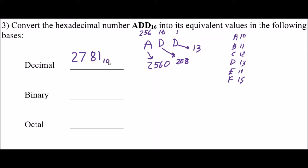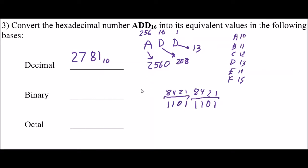Going to binary — each hexadecimal digit becomes 4 binary digits. A D is 13: 1s, 2s, 4s, 8s place — I need an 8 and a 4 and a 1, giving 13. So that's my first group. Another D is the same thing — 8, 4, 1 for 13 again. Then my A is 10: 1s, 2s, 4s, 8s place — I need an 8 and a 2 for 10. So my binary number is 1, 0, 1, 0, 1, 1, 0, 1, 1, 1, 0, 1. That is my base 2 number.